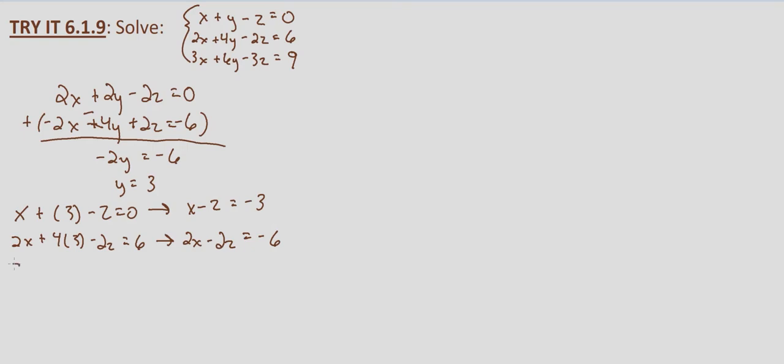And then 3x plus six times three minus 3z equals nine. That's going to end up giving us 3x minus 3z equals, 6 times 3 is 18, and then subtracting 18 from both sides, 9 minus 18 is negative 9.